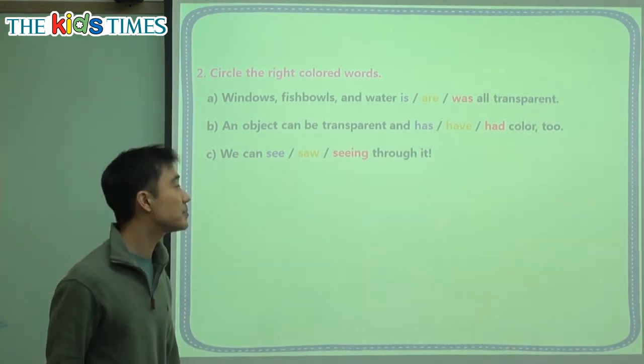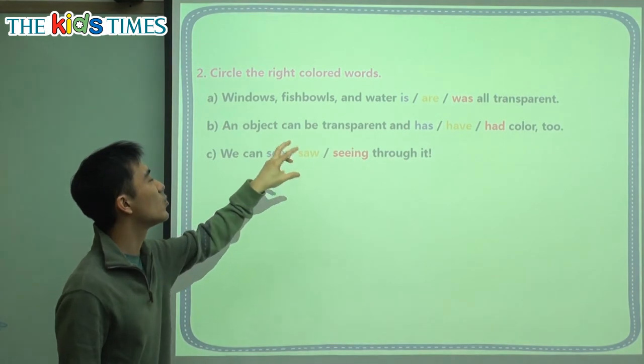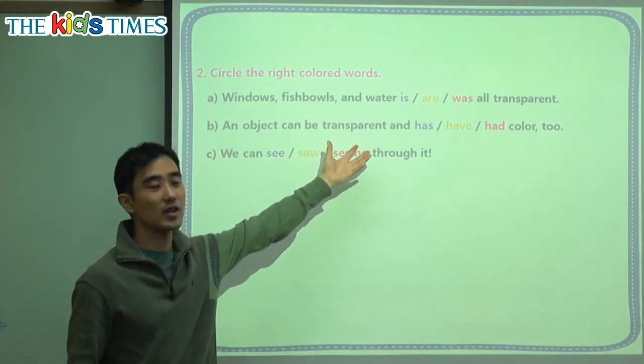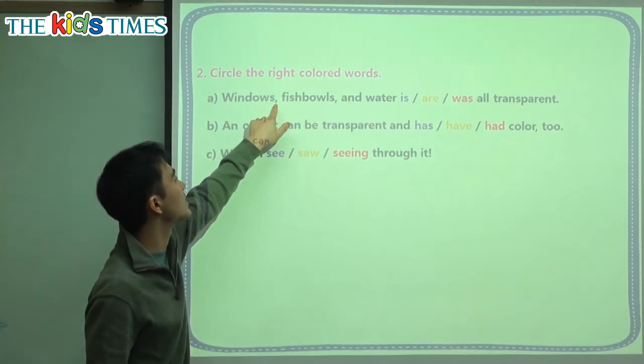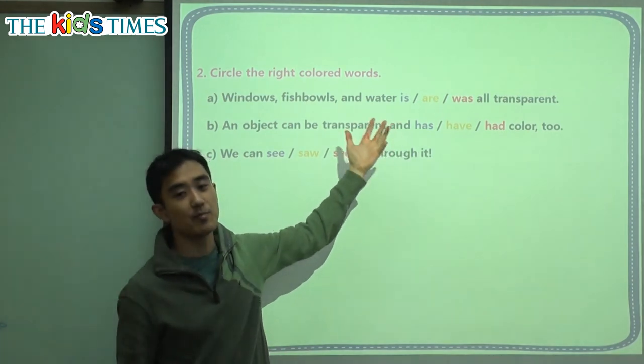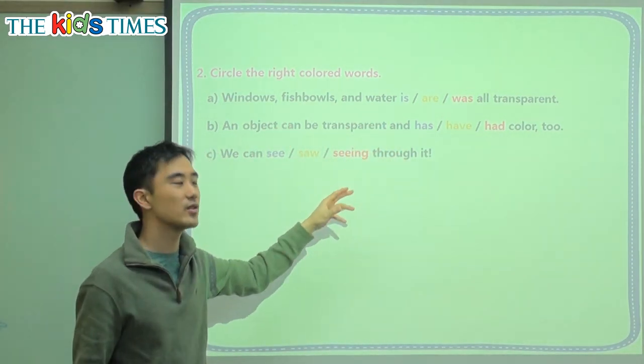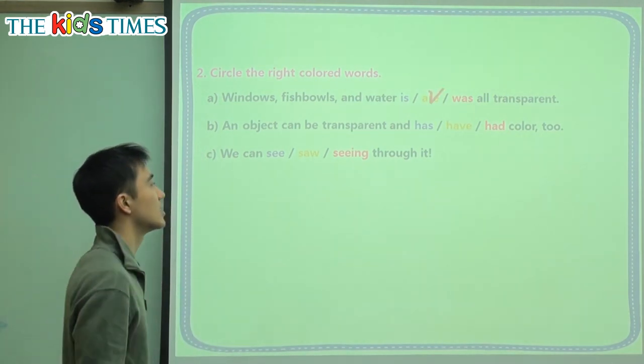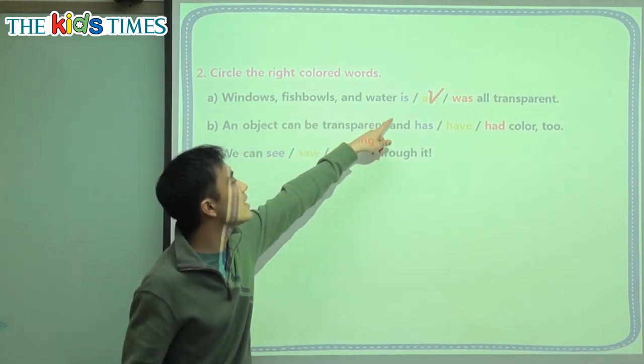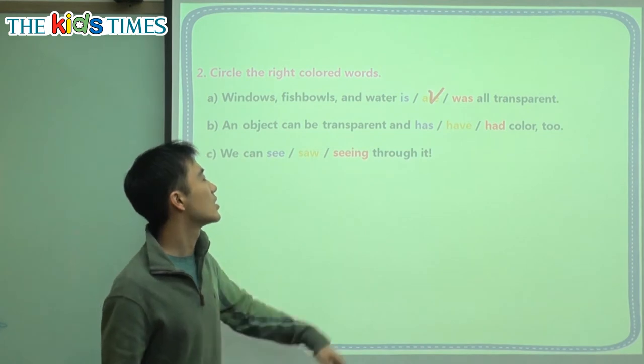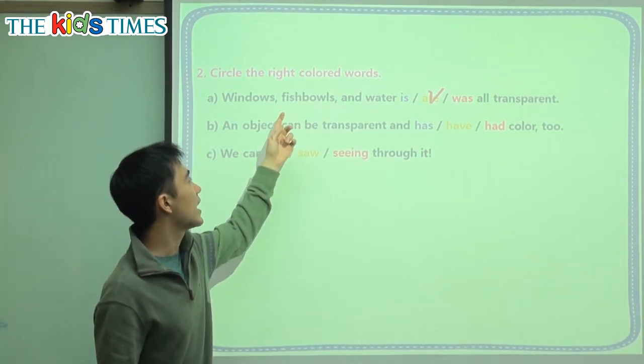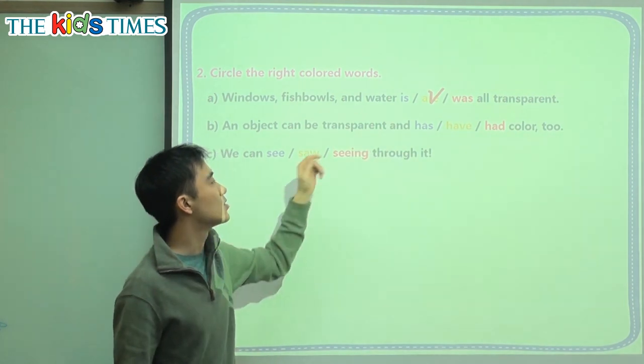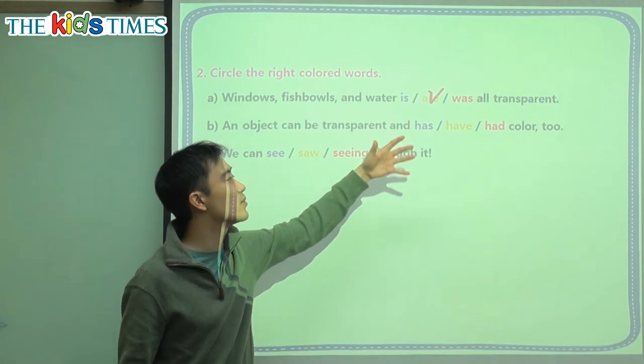Alright, we have three extra exercises here. First one, windows, fishbowls, and water, blank, all transparent. They're all 투명. We have three subjects here, we can tell by the commas. So which be verb do we use when we have many things to talk about? Boys, cats, and dogs. When we have many subjects, we have to use the be verb are, because we have many. Is is when we are talking about only one subject. So we can say water is transparent. A one fishbowl is transparent. Was is the 과거 or the past tense of is. Is transparent 투명하다? Was transparent was 투명했었다.